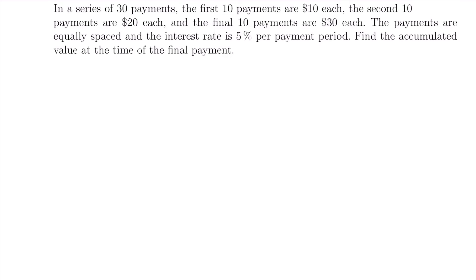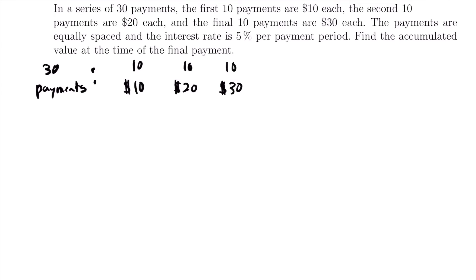We have 30 payments: 10 of $10, 10 of $20, and 10 of $30. The interest rate I equals 5%. We're not told if it's annual or semi-annual — it doesn't matter, since it occurs per payment period, which directly corresponds to when the payments are made. We'll use the future value of an annuity formula for each set of payments with its different payment amount.